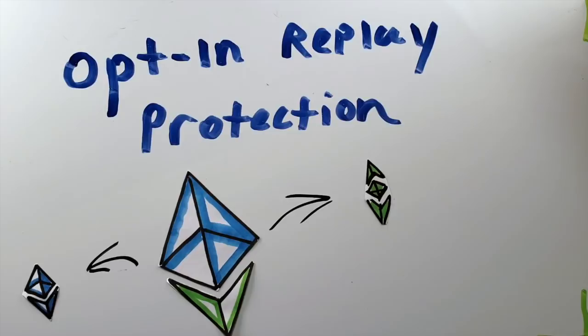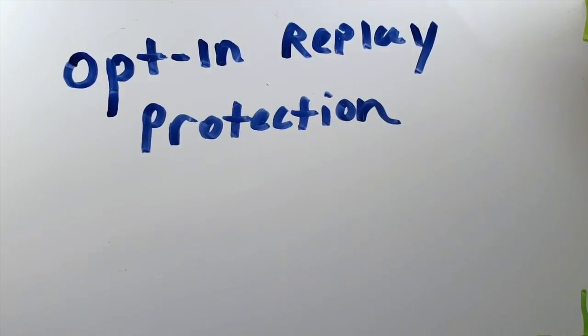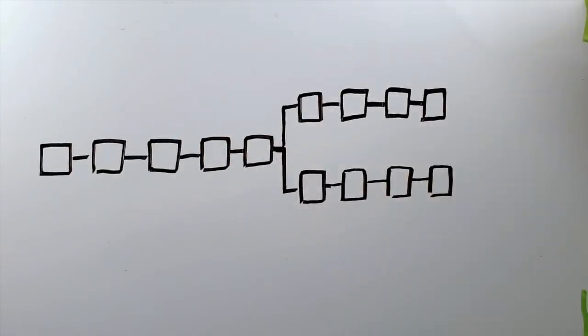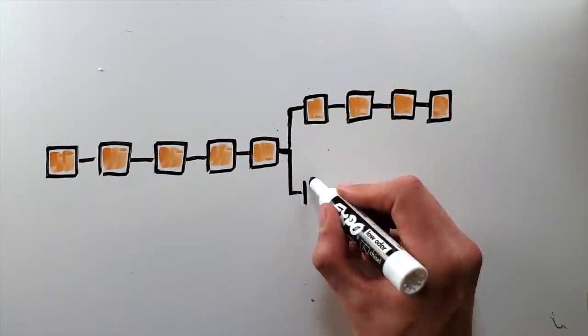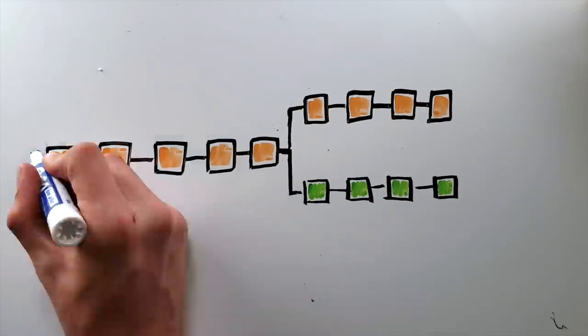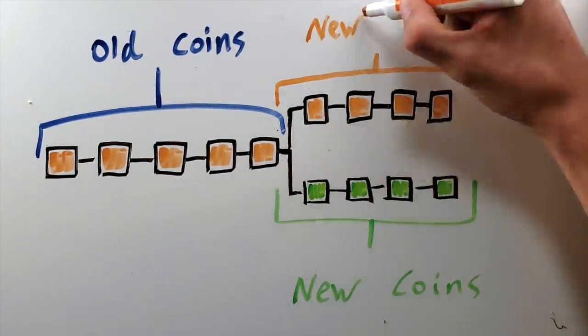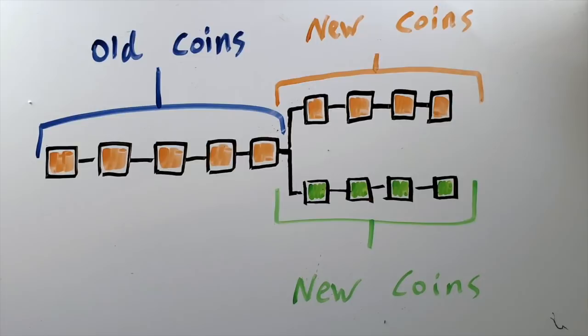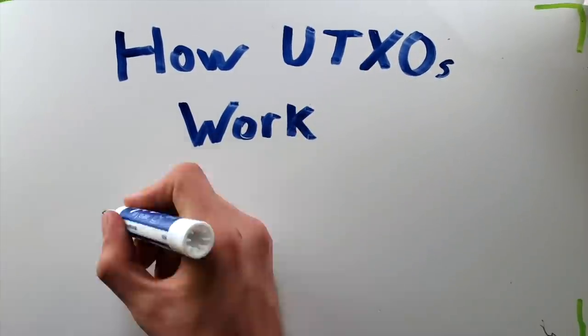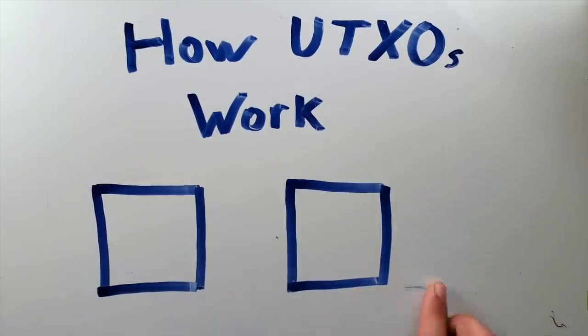Now, there are some voices in the Bitcoin Cash community that believe that opt-in replay protection should be avoided. Their argument is that we should only consider a transaction valid if it replays on both chains. But this position starts to break down when you consider that all new coins are already split. While all the coins in existence before the split are replayable on both chains, anything mined after that point can only be spent and received on the chain that it was mined.